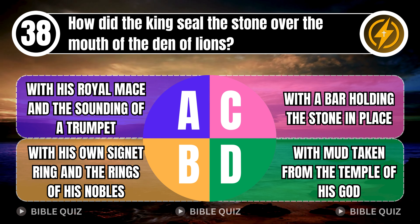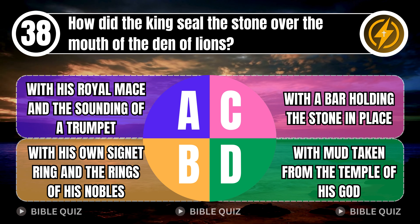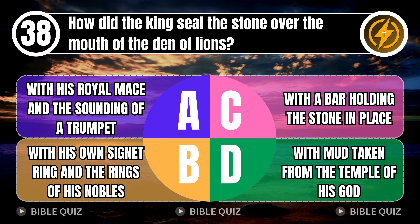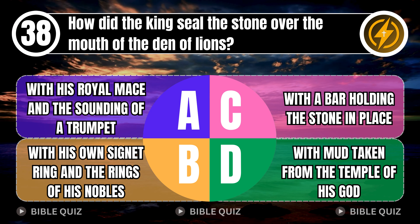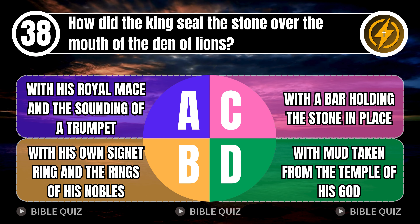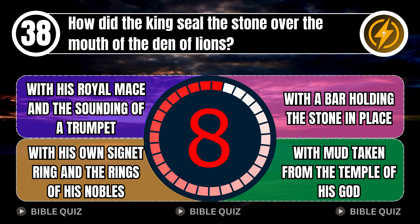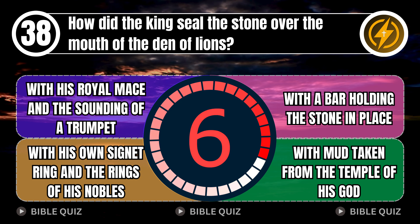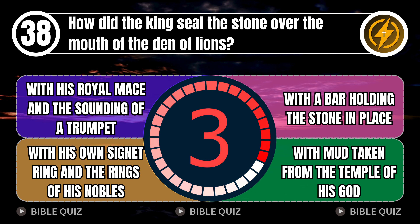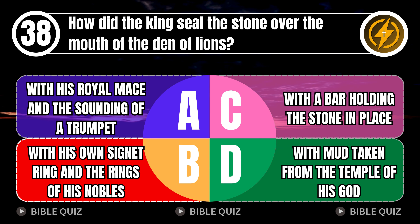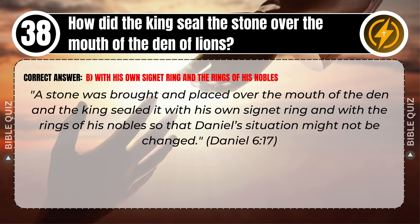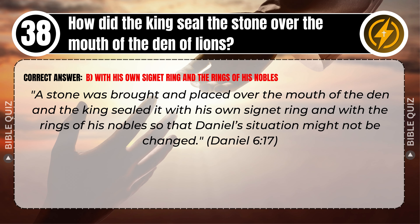Question 38: How did the king seal the stone over the mouth of the den of lions? A. With his royal mace and the sounding of a trumpet. B. With his own signet ring and the rings of his nobles. C. With a bar holding the stone in place. D. With mud taken from the temple of his god. Correct answer: B. With his own signet ring and the rings of his nobles. A stone was brought and placed over the mouth of the den, and the king sealed it with his own signet ring and with the rings of his nobles, so that Daniel's situation might not be changed. Daniel 6 verse 17.